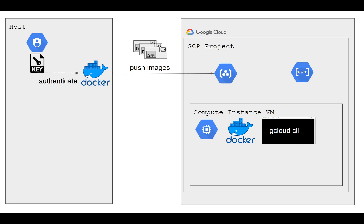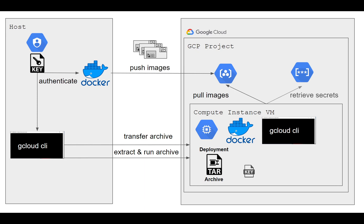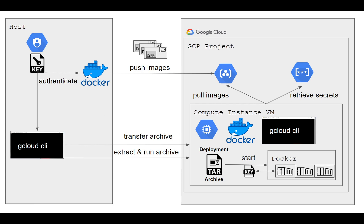We will use the key file to authenticate Docker locally and push the images we have just built to the registry. Next, we will use the gcloud CLI authenticated with the service account locally and transfer the deployment archive. Then we will extract and run the archive, which will pull the images from the registry and retrieve the secrets from the secret manager. That also includes a GPG key file that we stored in there, and then we will start the Docker containers and share the key file with the Docker setup.